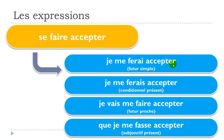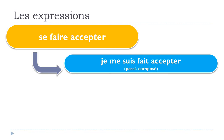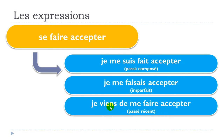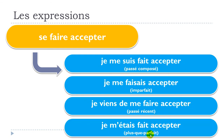Now four past tenses: passé composé — 'je me suis fait accepter'; imparfait — 'je me faisais accepter'; passé récent — 'je viens de me faire accepter'; plus-que-parfait — 'je m'étais fait accepter'.